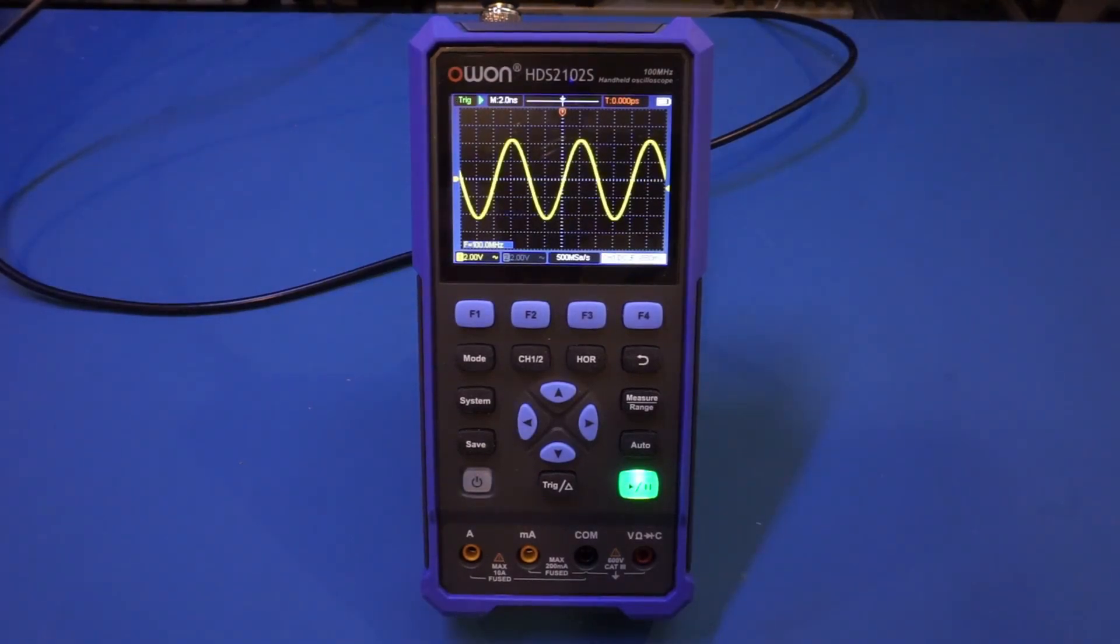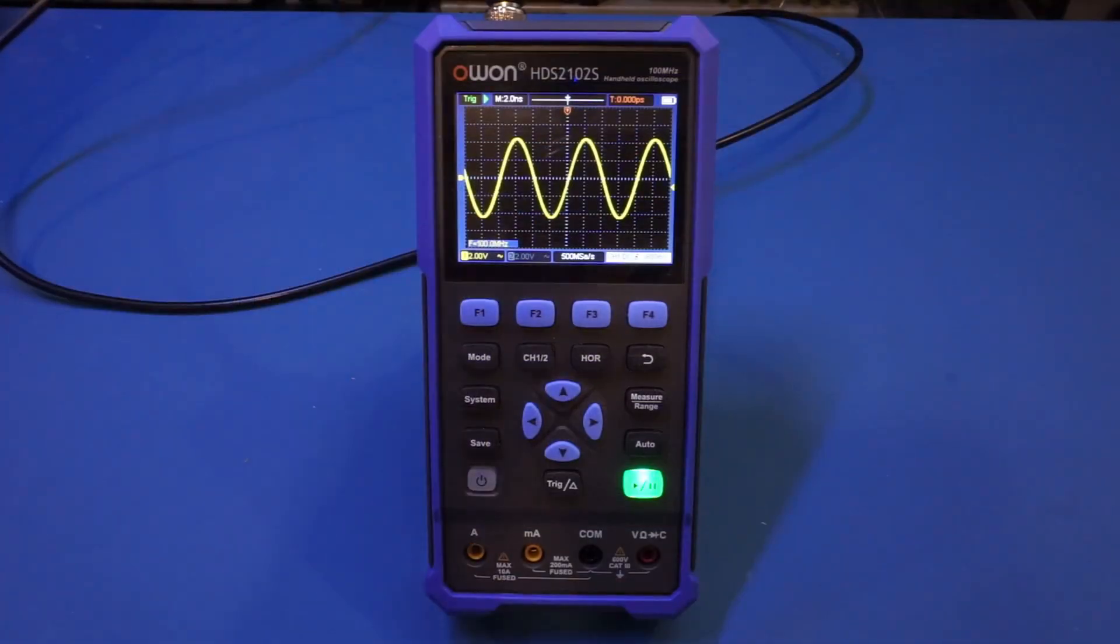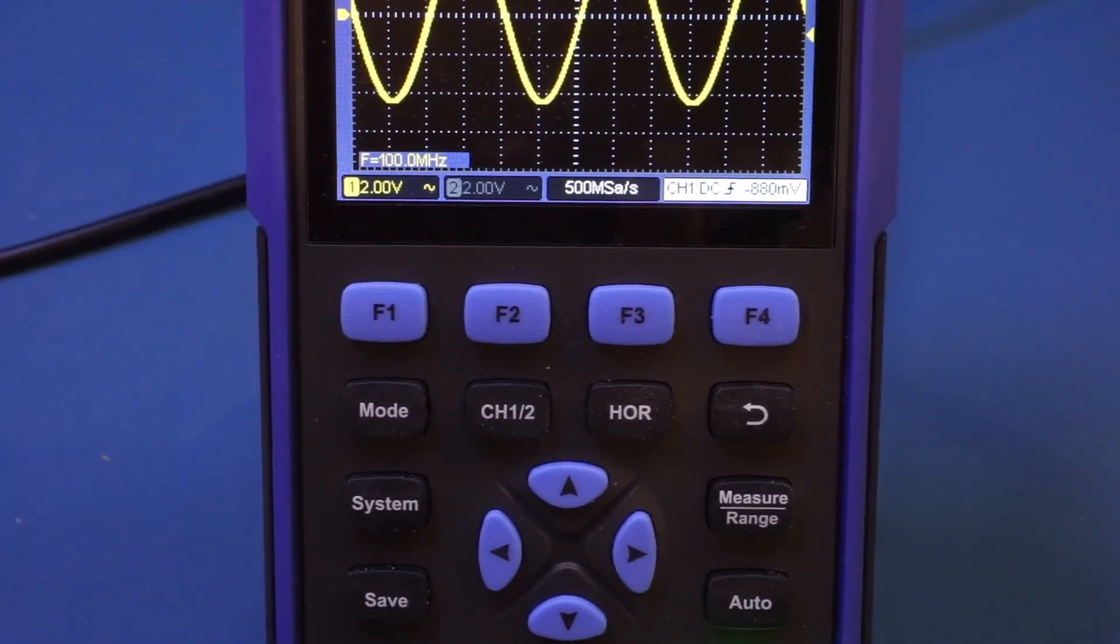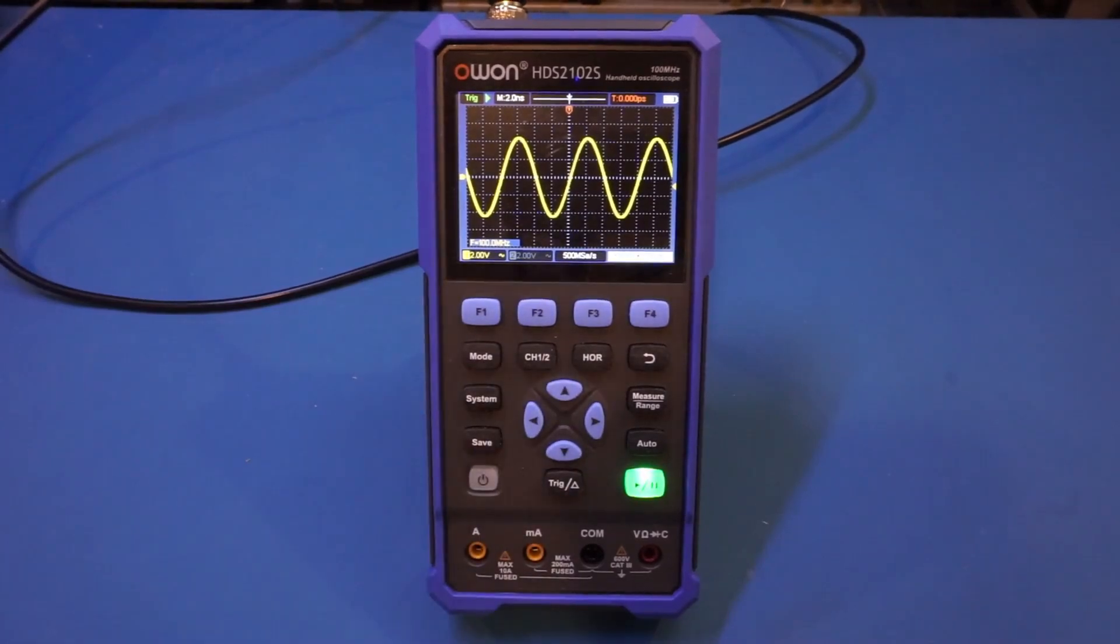Now I am measuring a 100 MHz 0 dBm signal from my HP 8642B. You can hear it's humming in the background. As you can see, we are currently showing 100 MHz from the measurement of the built-in frequency counter on the oscilloscope, so we know that the signal is indeed 100 MHz.